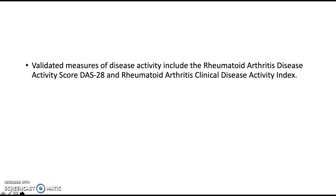Welcome to the rheumatoid arthritis lecture 2b. This is the second part of the second lecture in the series of lectures on rheumatoid arthritis. Here we are going to discuss the validated measures of disease activity that include the rheumatoid arthritis disease activity score called DAS28 and the rheumatoid arthritis clinical disease activity index.